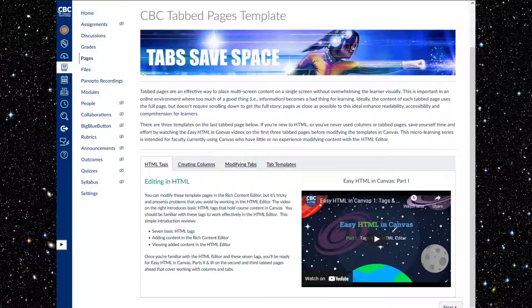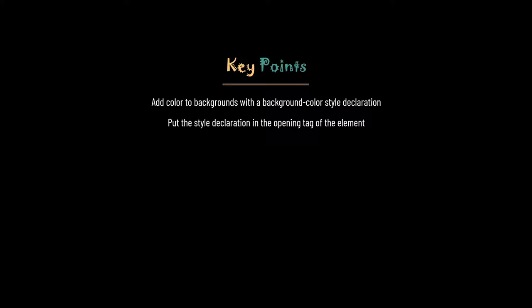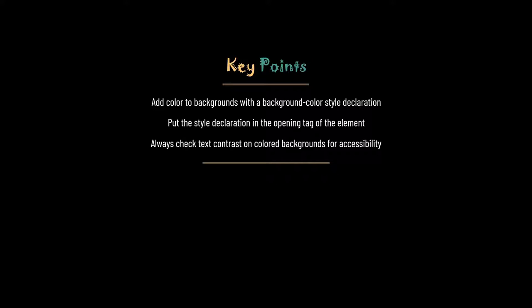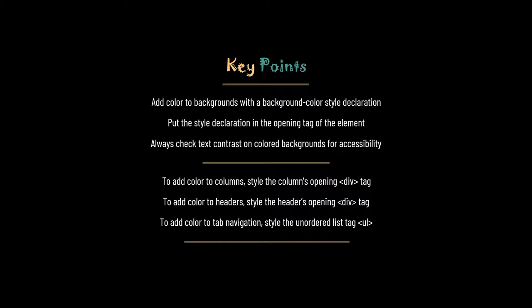And that's all it takes to add color to backgrounds in Canvas. Let's review our key points. Add color to backgrounds with a background-color style declaration. Put the style declaration in the opening tag of the styled element. Always check contrast of any text on colored backgrounds for accessibility. To add color to columns, style the column's opening div tag. To add color to headers, style the header's opening div tag. And to add color to tab navigation, style the unordered list tag.